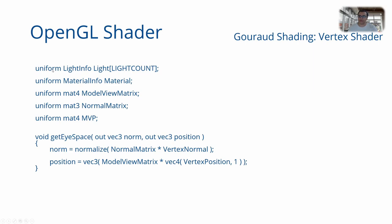We define uniform variables of both struct types. There might be multiple light sources, so that is given by light count. We define an array of the type LightInfo. The material of the surface for which you are passing a vertex is passed in this uniform variable called Material.